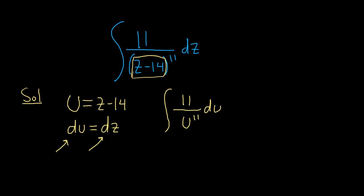Those 11s look really funny. We're not quite there yet, but the goal is to get something to a power so we can use the power rule. So we can bring the u to the 11 upstairs, and that'll become a u to the negative 11 du.